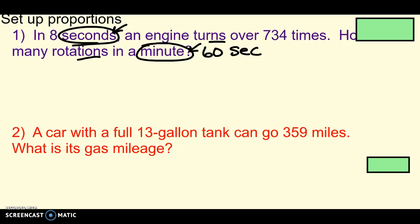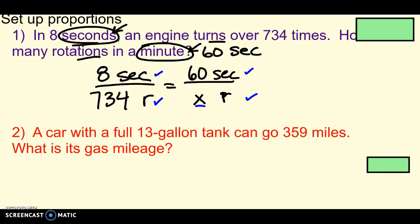So, eight seconds, an engine turns over 734 times. That's a ratio that I do know. So, always start with the ratio you know. Doesn't matter which way I set it up. Eight seconds, 734 rotations or times. And then they say, how many rotations. Ah, so this is what I don't know. I don't know how many rotations here. In a minute. And we said we were going to use 60 seconds for a minute, so that the units all matched. So, double check. Seconds, seconds, rotations, rotations. This is the part I'm looking for. And then either use cross products, probably easiest for this one. Or, yeah, nothing easy in your head, so cross products.